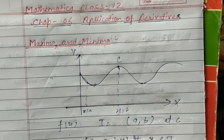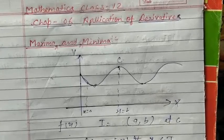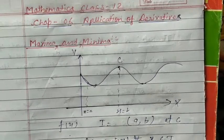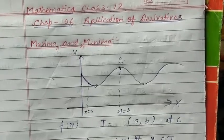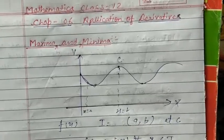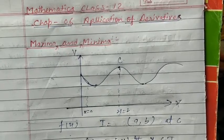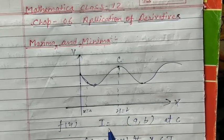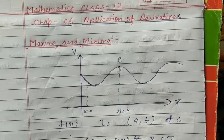So students, f(c) is called the maximum value of f — that is, the maximum value of the function. The value of the function at c, which is f(c), is what we call the maximum value of the function.